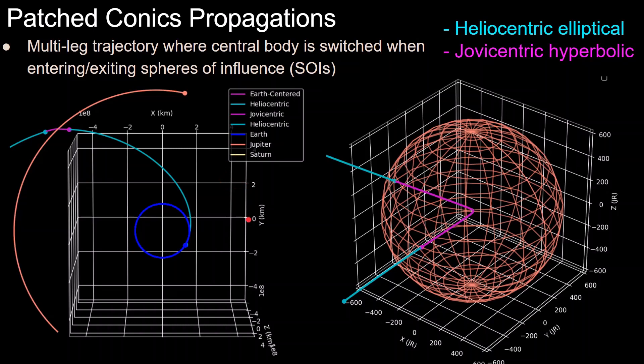The reason we use the word 'patched' is because multiple legs of the trajectory are connected at the edge of the sphere of influence, but each leg models the dynamics differently. The word 'conics' comes from the fact that any two-body trajectory is a conic section — a circle, ellipse, parabola, or hyperbola — because in the patch conic method we assume two-body dynamics.